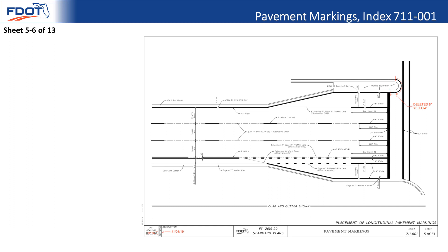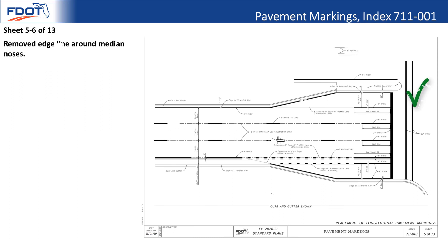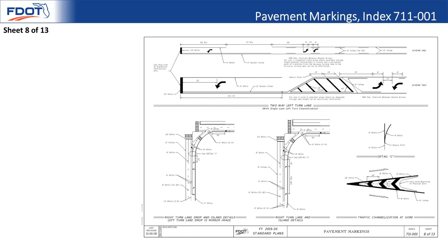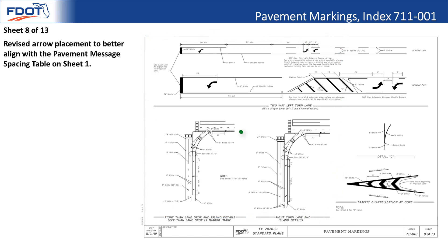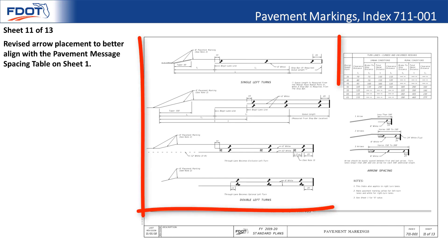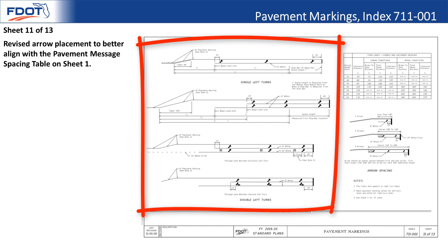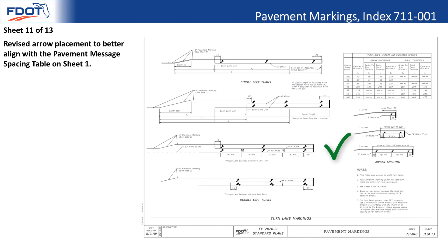Sheets 5 and 6 of 13: similarly to the typical placement of raised pavement markers, the edge line pavement marking around the median noses has been deleted. Sheet 8 of 13: the turn arrow placement has been revised to better align with the pavement message spacing table on sheet 1, with those messages shifted around. The same applies on sheet 11 of 13, where some pavement messages and arrow spacing details have shifted. Notes were updated accordingly.